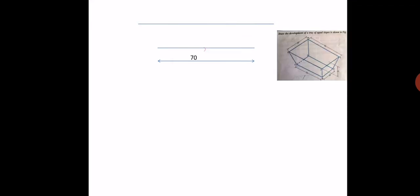Now join the ends of both lines — the upper line is 90 mm, so join the ends like this. This is the front view. Name the bottom base left side as A and D, denoted as A-dash and D-dash, and the right bottom side as B and C, denoted as B-dash and C-dash. The upper naming is done correspondingly. We have now drawn the front view. Next, drop perpendiculars from each junction point of the front view.